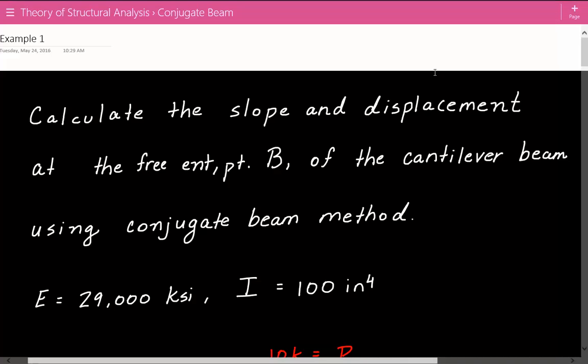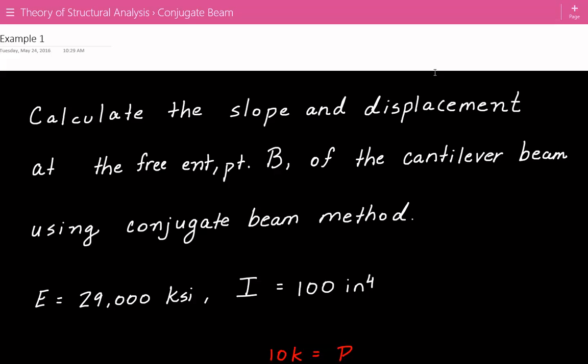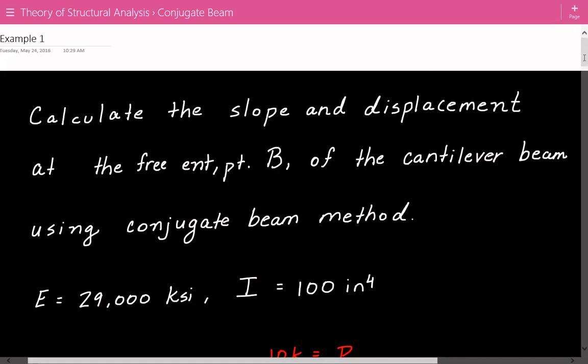This is example number one for structural analysis of deflections using the conjugate beam method. The problem statement asks us to calculate the slope and displacement at the free end, point B, of the cantilever beam using the conjugate beam method.